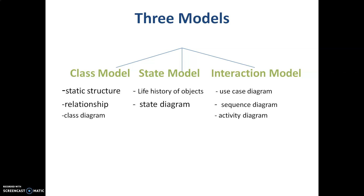When it comes to the three models — the three pillars of object-oriented modeling and design — we deal with the class model, state model, and interaction model. The class model deals with static structure: what are the different classes, the different objects, and how they are related to each other. You focus on relationships and come up with a class diagram. Generally, classes happen to be common nouns in a problem statement.